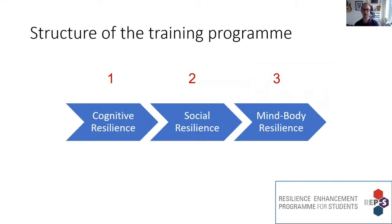The structure of the training program is in three parts, each with two workshops. Cognitive resilience is the first section with two workshops, then social resilience, and then mind-body resilience — or psychophysiological resilience. I'll talk you through each of those three sections briefly in terms of the two workshops and the ethos of those workshops.